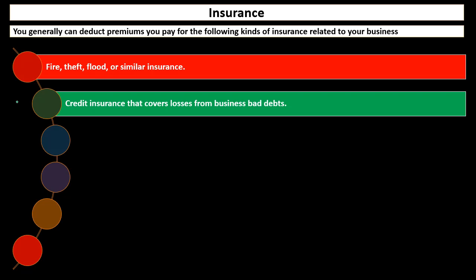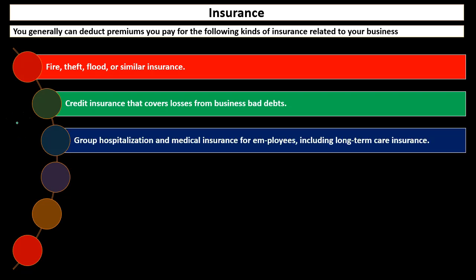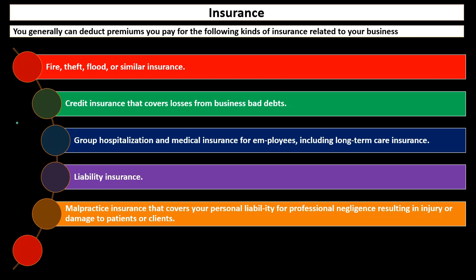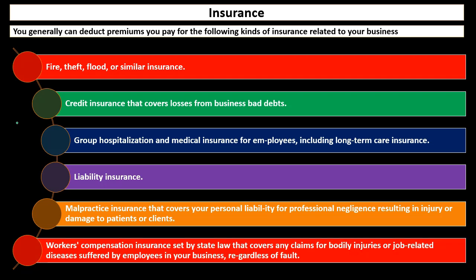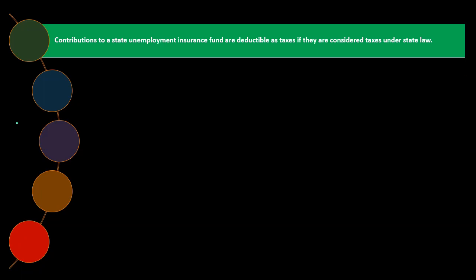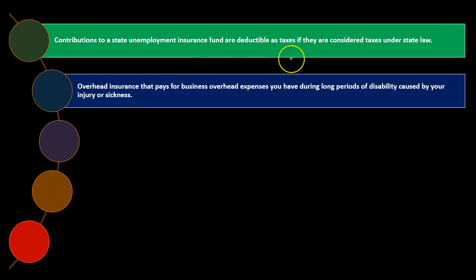Credit insurance that covers losses from business bad debt. Group hospitalization and medical insurance for employees, including long-term care insurance. Liability insurance and malpractice insurance that covers your personal liability for professional negligence resulting in injury or damage to patients or clients. Workers' compensation insurance set by state law that covers any claims for bodily injuries or job-related diseases suffered by employees in your business regardless of fault. Contributions to a state unemployment insurance fund are deductible as taxes if they are considered taxes under state law.